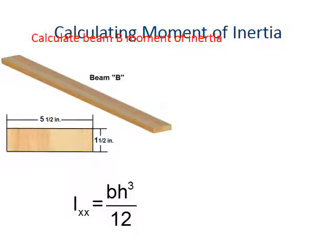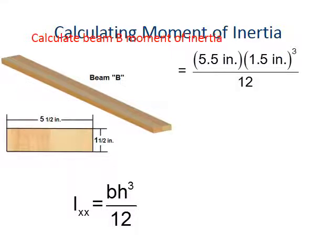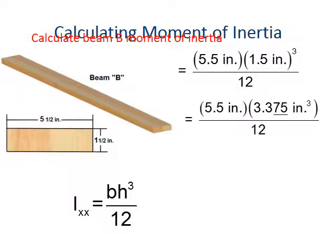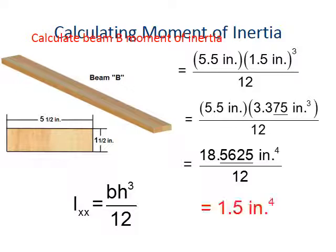Well, let's take a look at beam B. Same board, same dimensions, just laid differently. So here, beam B, five and a half inches is our b dimension. In other words, it's horizontal. And then our one and a half is our h. That is the one we cube. And when we plug and chug and do the math, we find that in this case, I equals 1.5. So you can see for the same board, they're way different in terms of their moments of inertia.